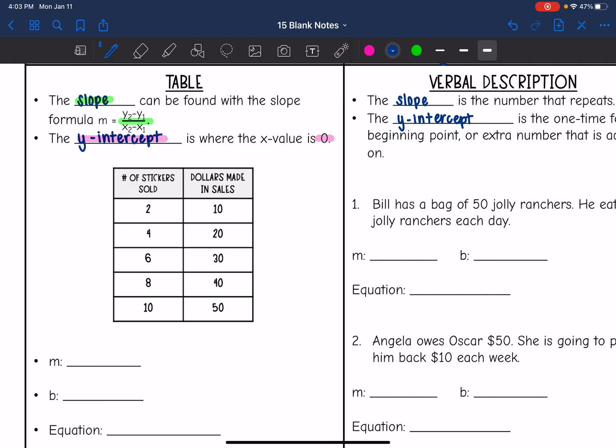So let's start by finding the slope. I'm just going to use the first two ordered pairs for my x1, x2, y1, y2. So for my slope, I will do 20 minus 10 for y2 minus y1 over 4 minus 2 for x2 minus x1. 20 minus 10 is 10. 4 minus 2 is 2. And 10 divided by 2 simplifies to 5. So my slope is 5.